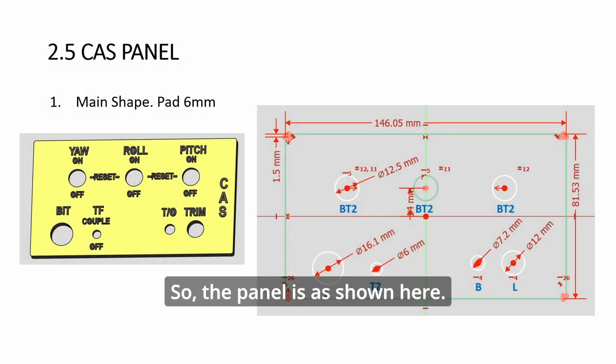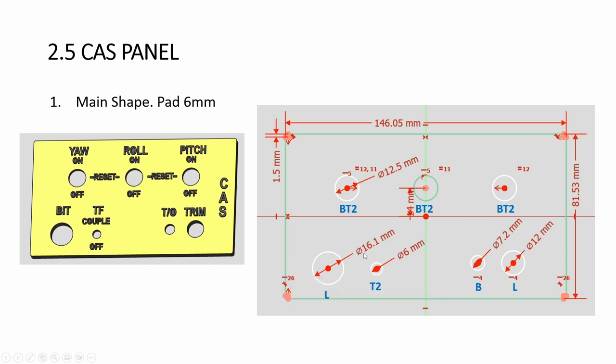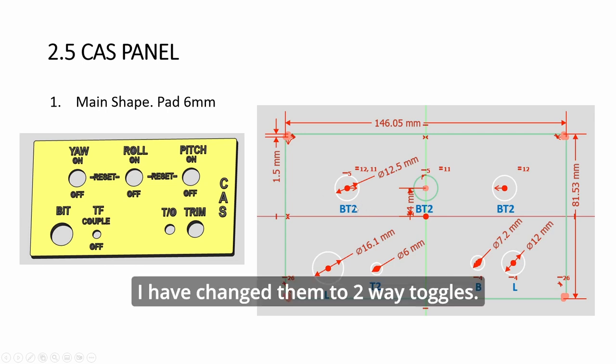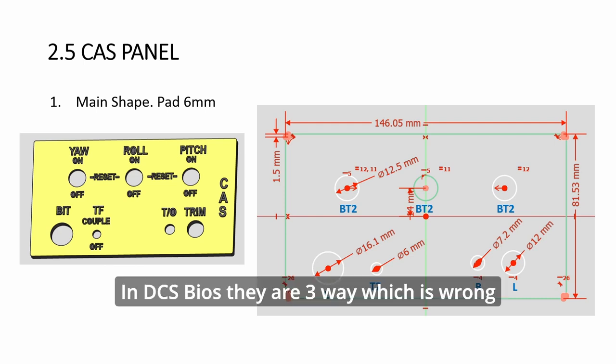So the panel is as shown here, three big toggles. I've changed them to two-way toggles. In DCS BIOS, they are three-ways, which is wrong. I'll explain later.